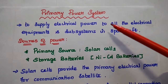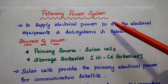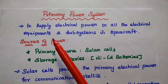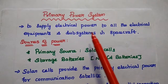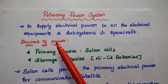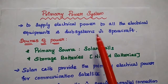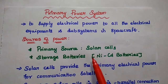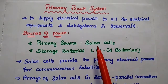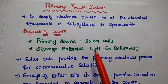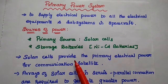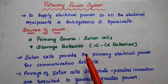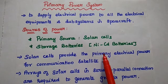We are going to discuss the primary power system in satellite communication. The power system is mainly used to supply electrical power to all the electrical equipments and subsystems present in the satellite. Solar cells are the primary sources of electrical power in a satellite, providing primary electrical power to all the electrical equipments and subsystems in a communication satellite.